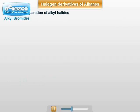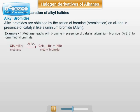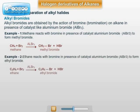Alkyl bromides are obtained by the action of bromine on an alkane in the presence of a catalyst such as AlBr₃, that is aluminum bromide. For example, methane reacts with bromine in the presence of AlBr₃ as a catalyst to give methyl bromide. Ethane reacts with bromine in the presence of AlBr₃ to give ethyl bromide.